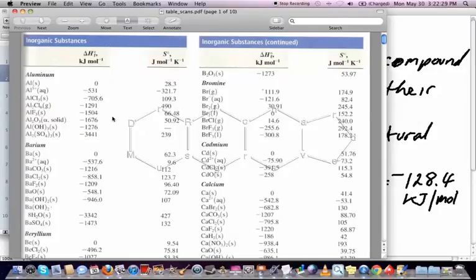And it's this column here that you're looking at, delta HF0. It's measured in kilojoules per mole.